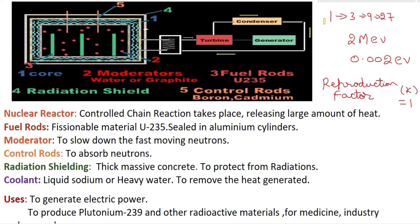One neutron entered the core, underwent nuclear fission, and released three neutrons. These three neutrons again hit three more uranium-235 nuclei and release a total of nine neutrons. If this fission reaction keeps going, one neutron becomes three, three becomes nine, nine becomes twenty-seven, and this continues — meaning the fission reaction becomes uncontrollable.